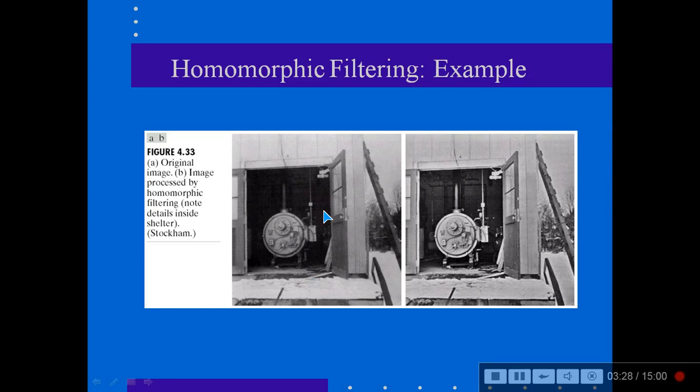This is an example of homomorphic filtering. This is an original image. This is the image processed by homomorphic filtering. And you see the details which are inside the shelter are quite prominent now.